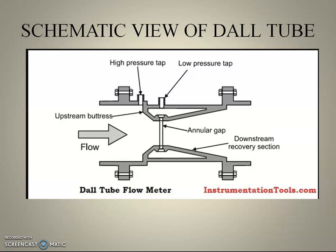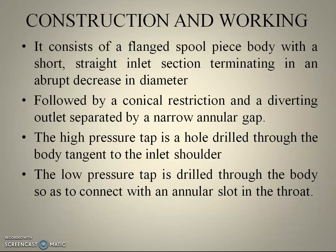The short straight inlet is followed by an abrupt decrease in diameter. A narrow annular split is present in the throat section, which separates the short inlet and the diverging outlet. This is the narrow annular split. This is the flow direction, and this is the downstream rectifier section, and these are the two tappings. This is the schematic DAL tube diagram.